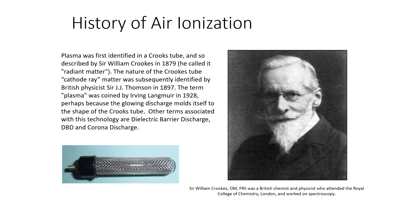The history of ionization goes all the way back to Sir William Crookes in 1879, developed before ASHRAE came about around 1894 or 1895. In 1897, they looked at wanting to change the term to plasma tube, because Sir William Crookes called it the radiant matter tube as well as the Crookes tube. Crookes tube is not the best name to promote the technology, so they called it plasma tube, and it has been called plasma tube ever since.